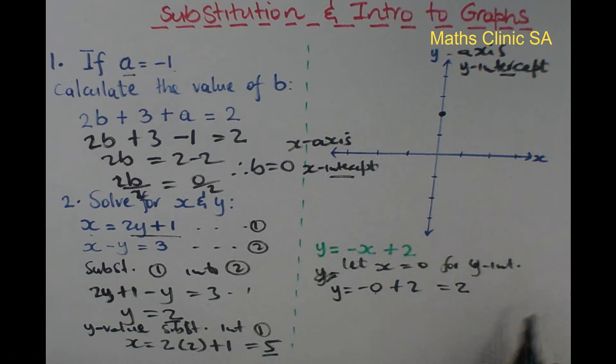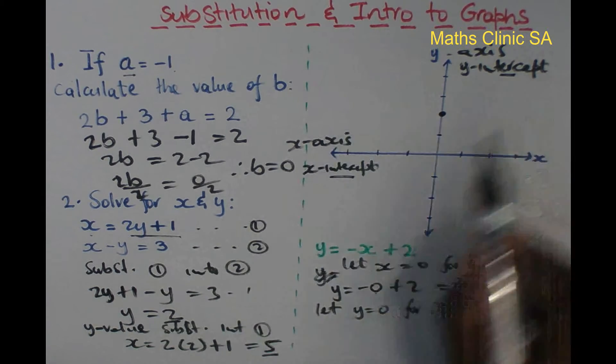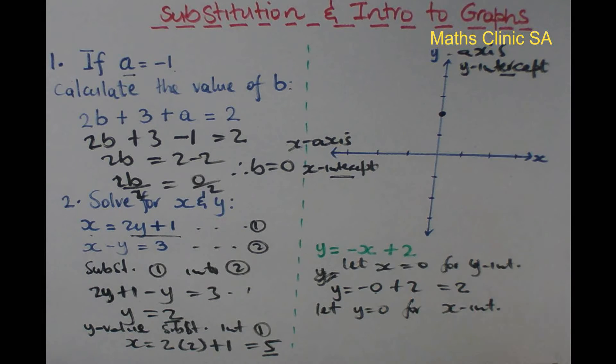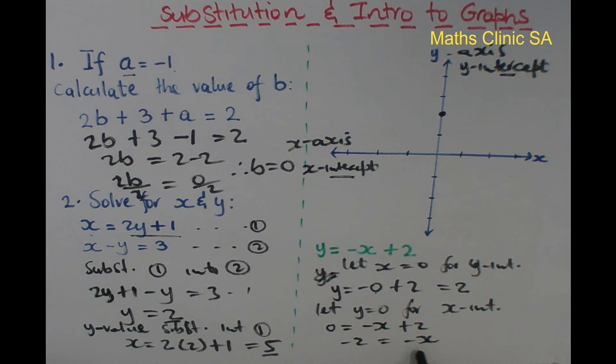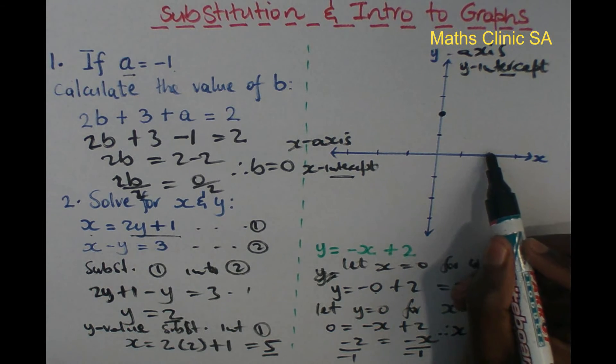To get the x-intercept, we let y = 0. So 0 = x + 2, which gives x = -2. Therefore x = 2. The line cuts the x-axis at this point.